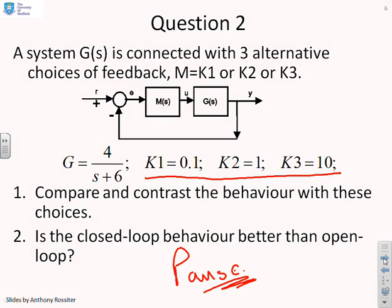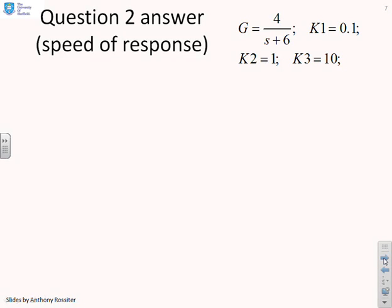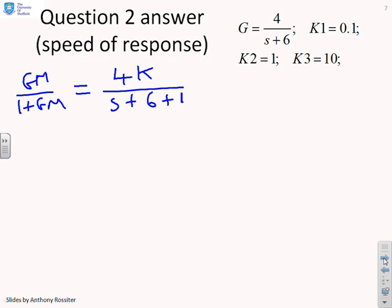I'm now going to move to a solution. First then, let's look at speed of response. So we can show that gm over 1 plus gm for this particular case is going to be written as 4k over s plus 6 plus 4k. And now what we can do is plug in the different values of k that we've been given and see what we get. So if I start with the poles.